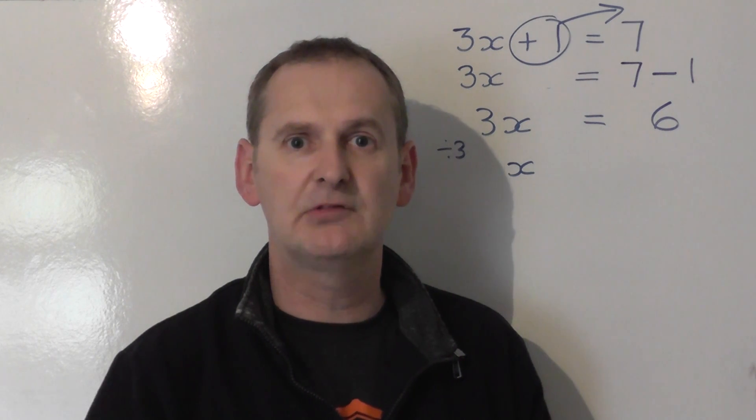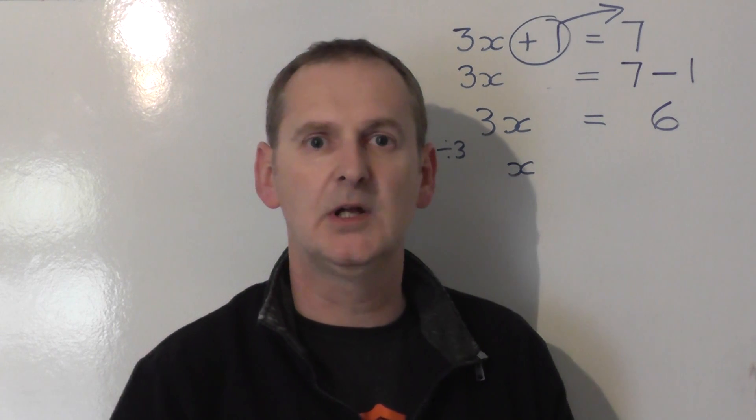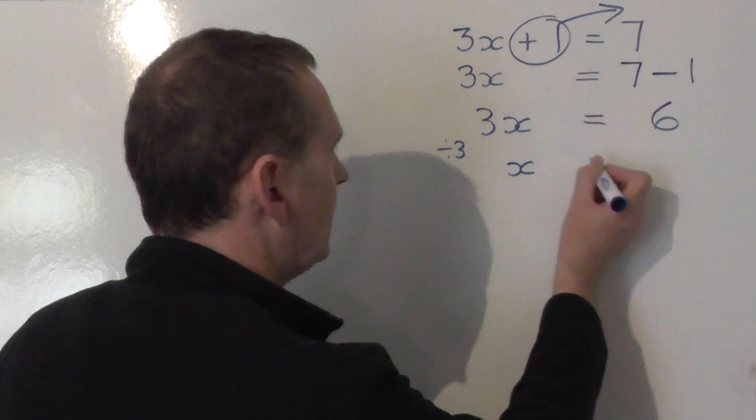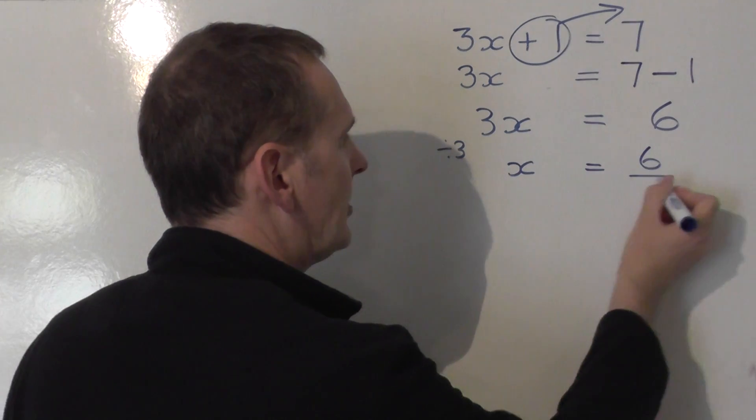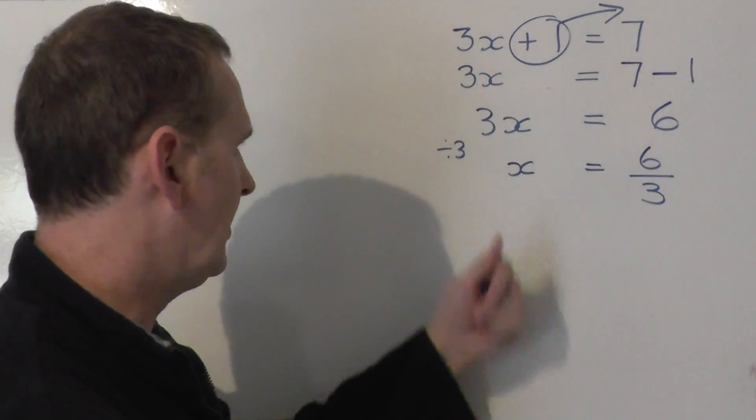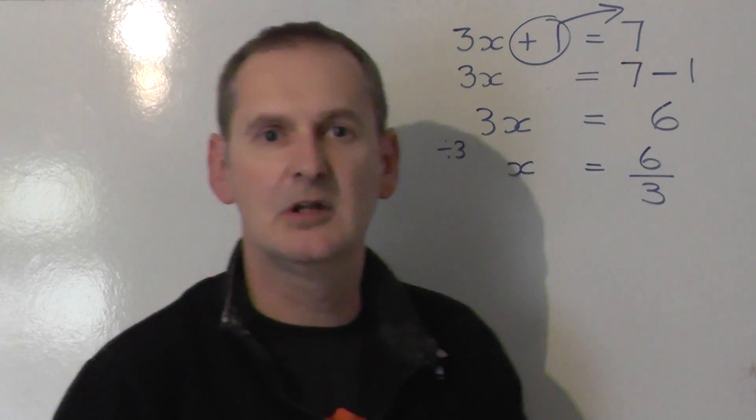It's like a seesaw. Share one side by 3, share the other side by 3 as well. So I'm going to take the number on the other side, which is 6, and I'm going to share that by 3. So I've shared that by 3, share that by 3, so it still balances.